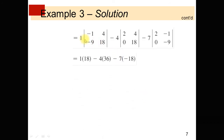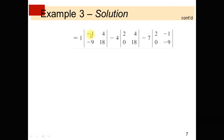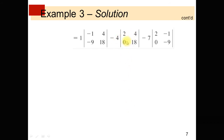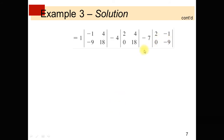Expanding by the first row: 1 times the minor determinant (−1, 4, −9, 18), minus 4 times the minor determinant (2, 4, 0, 18), plus −7 times the minor determinant (2, −1, 0, −9). Computing: 1 times (−18 + 36) = 18, minus 4 times (36 − 0) = −144, plus −7 times (−18 − 0) = 126. After simplification, the result equals 0.